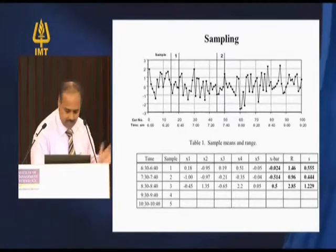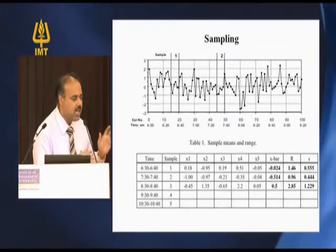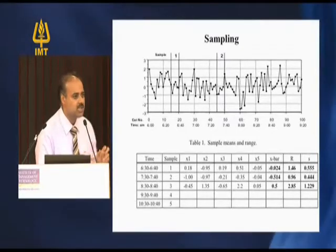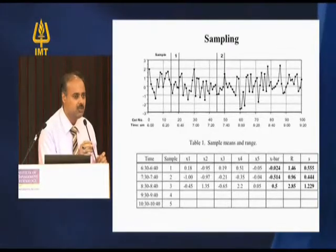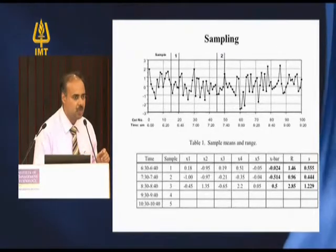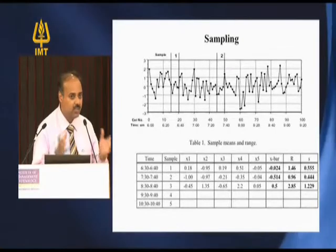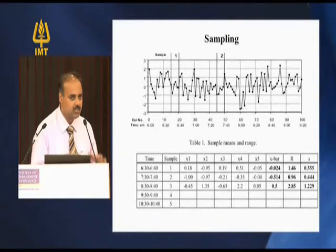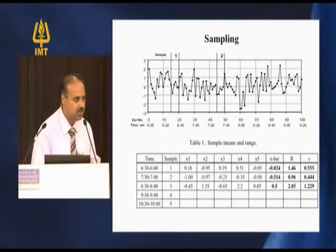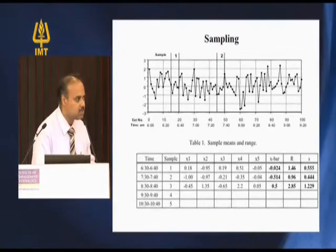From those data points, they calculated the x-bar (mean), then the range, and finally the standard deviation S. We use small 's' rather than sigma because this is a sample standard deviation, not a population standard deviation. They then took a first sample, second sample, and third sample with all their timings.